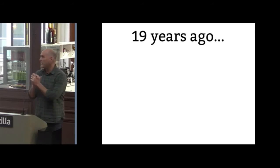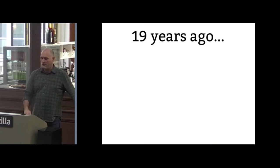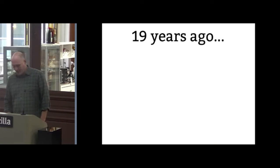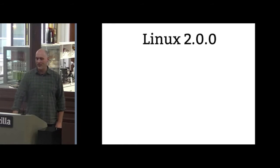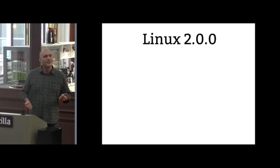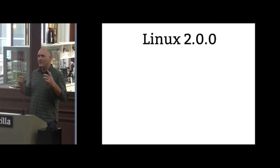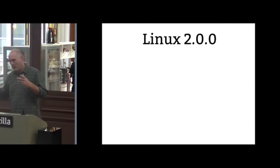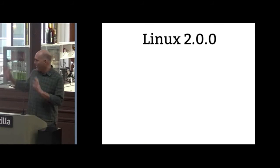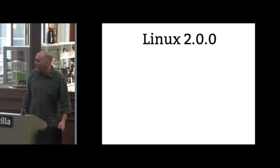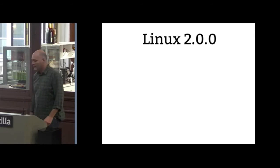Let's talk some history about the kernel development process. Let's forget everything before 19 years ago — that was a long time ago. I went and did these numbers the other night. 2.0 came out 19 years ago. Before that we had a really weird numbering scheme with .09 for about a year and then 1.3 for some unknown reason. Anyway, 2.0 — 1996 came out.